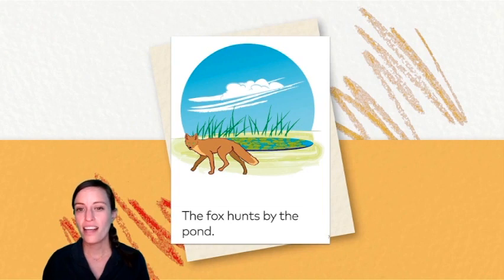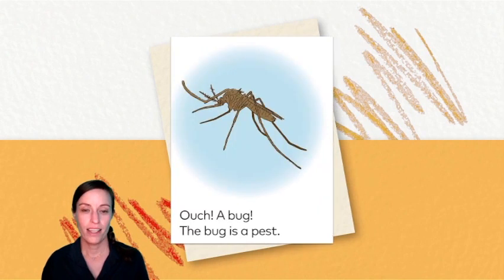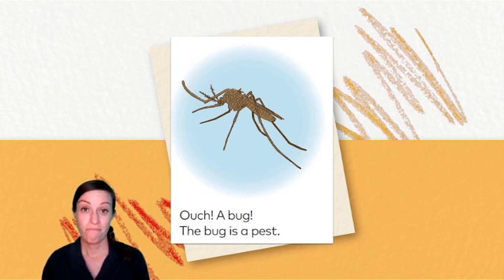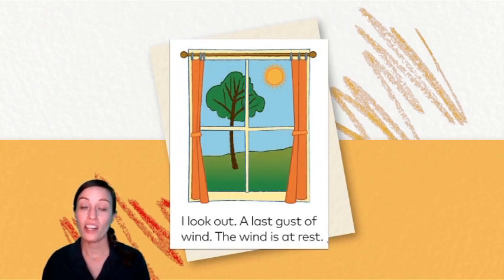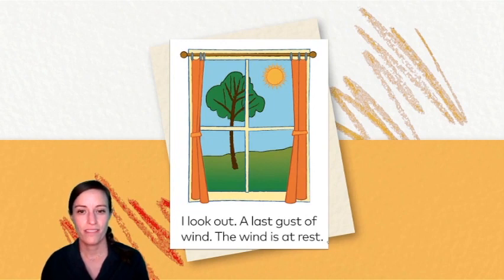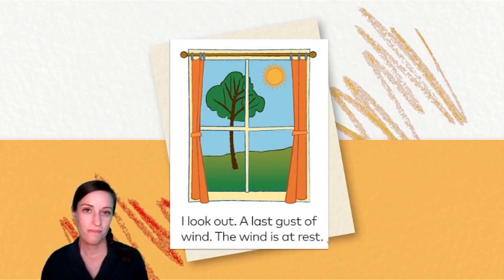The fox hunts by the pond. Ouch — a bug. The bug is a pest. Did you spot any words with OU on this page? Ouch. I look out. A last gust of wind. The wind is at rest. Can you spot one final OU word on our last page? That's right — out.